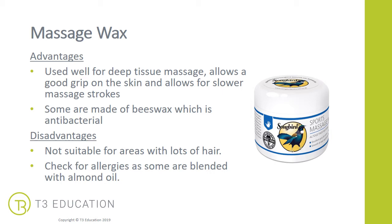The next is massage wax. Massage wax is a really good medium to use when you want to do slower and more sustained massage strokes, as it allows you to get a really good grip of the tissues. It really helps with palpation as well because you're slowing the work of your hands onto the tissues. They're often made of beeswax and/or almond oil, and if made with beeswax, some are antibacterial.